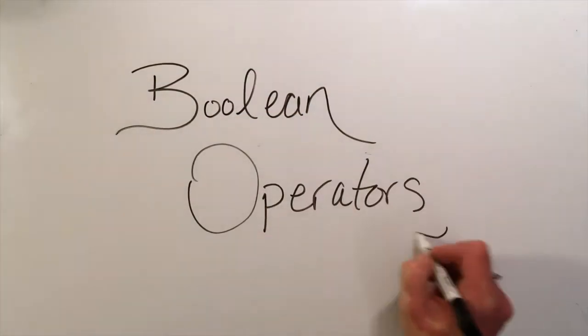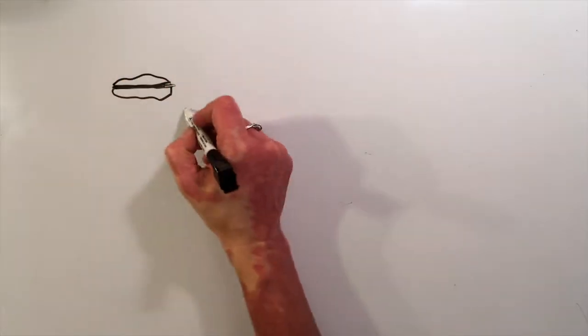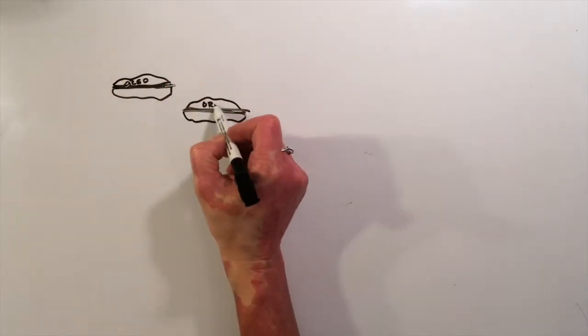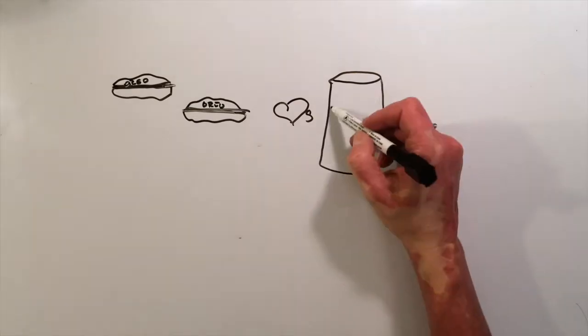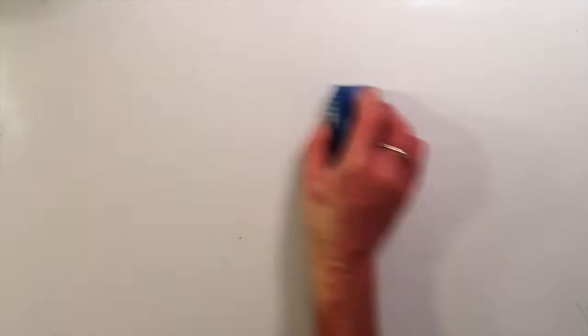All right, so now we're going to learn about Boolean operators. Boolean operators are something that you use when you've got two different concepts and you want to show that they belong together. One example is Oreos and milk. Oreos and milk always belong together.